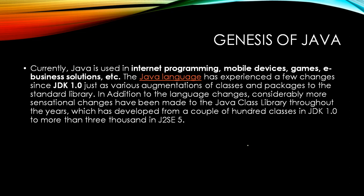Java has experienced a few changes since Java Development Kit 1.0, which is the first version of the JDK, where you actually built your programs along with various extensions of classes and packages to the standard library. In addition, more dramatic changes have been made to the Java class library over the years — growing from a few hundred classes in JDK 1.0 to more than 3,000 in J2SE 5, which stands for Java 2 Standard Edition version 5.